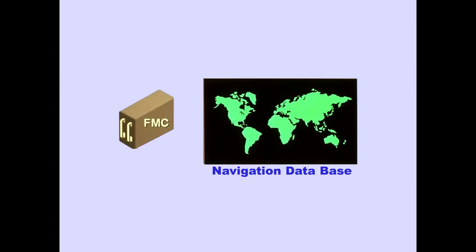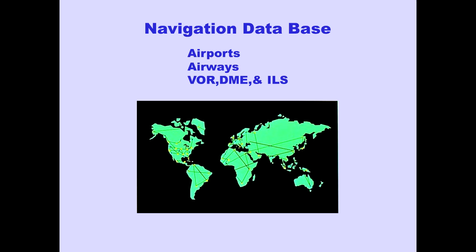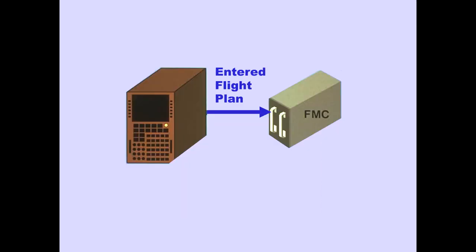Contained within each FMC is a navigation database. The navigation database contains all the information necessary for worldwide navigation. The data includes airports, airways, and navigation radio stations. The FMC receives the flight plan from the FMS CDU. Flight plan entry is covered in FMS preflight.